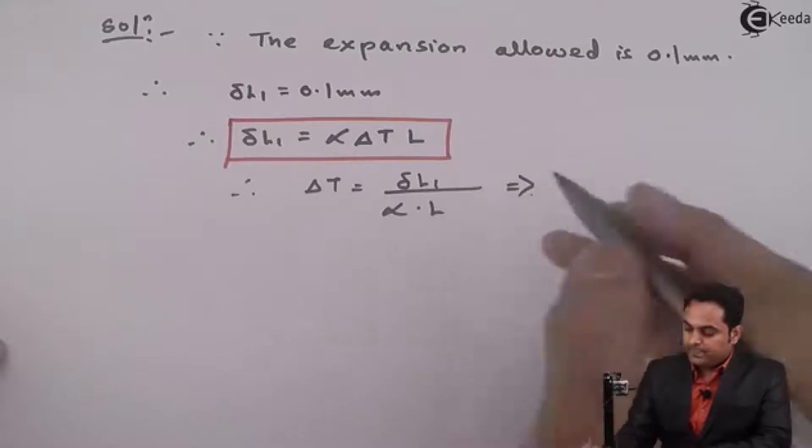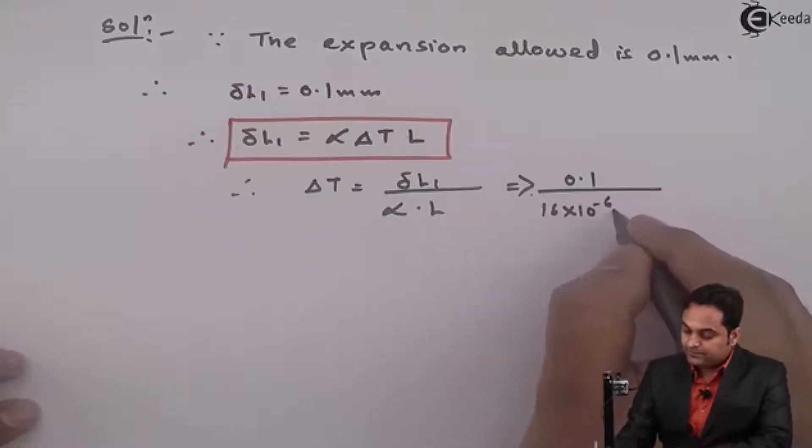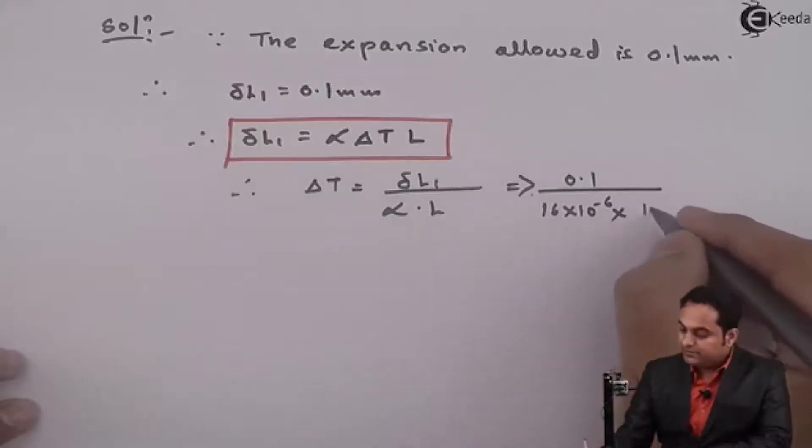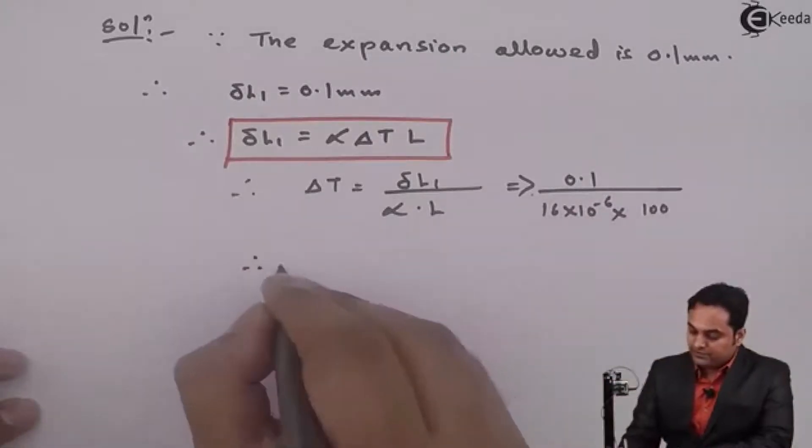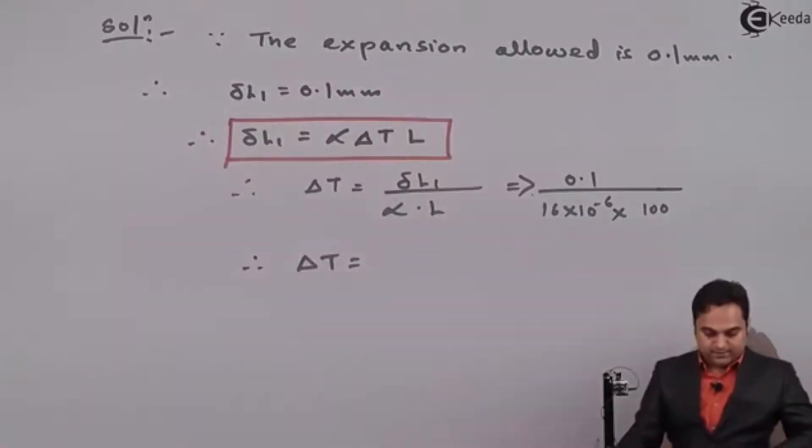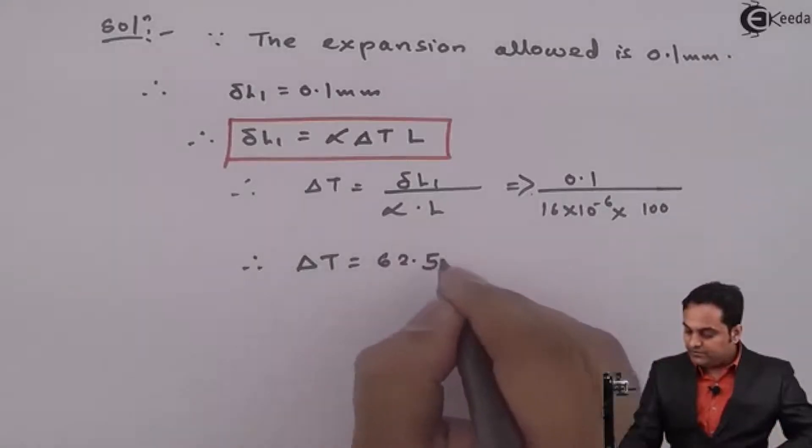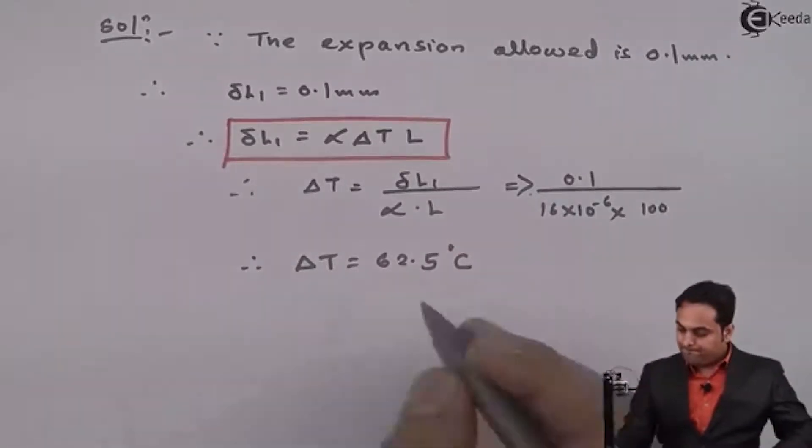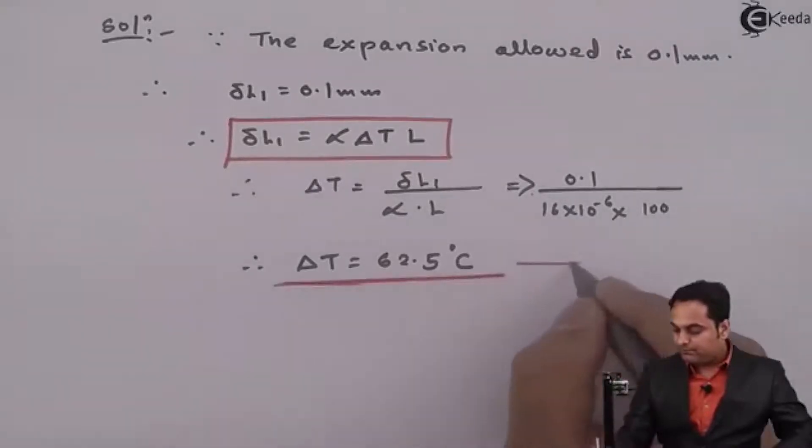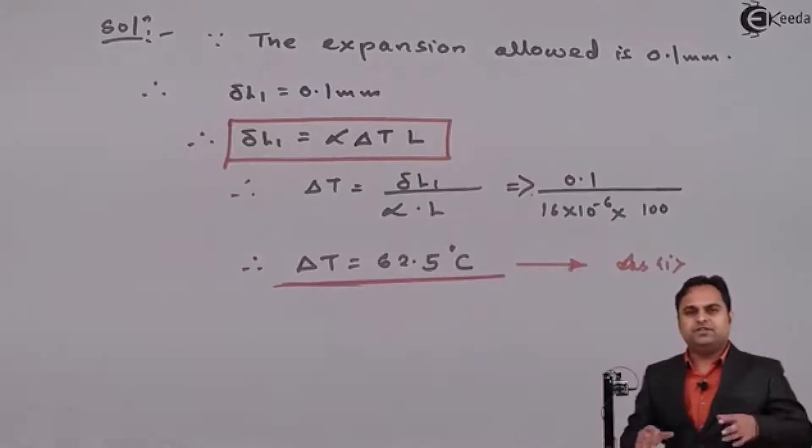Therefore I want delta T. I'll keep delta L₁ upon alpha into L on to the other side. Delta L₁ is 0.1, alpha value is 16 × 10⁻⁶, length is given as 100. So from this I'll get my first answer of delta T, that is it comes out to be 62.5 degrees Celsius.